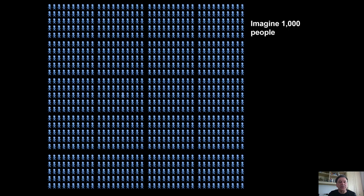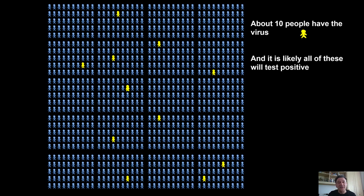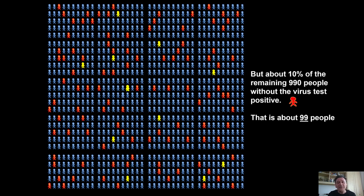Imagine we have a thousand people. Because roughly 1 in 100 has the virus, we can expect about 10 out of the thousand to have it, and it's likely that all of those will test positive, given our 99% true positive rate. But here's the problem: we have a 90% true negative rate, which means the false positive rate is 10%. So about 10% of the remaining 990 people who don't have the virus are going to test positive — that's about 99 people.